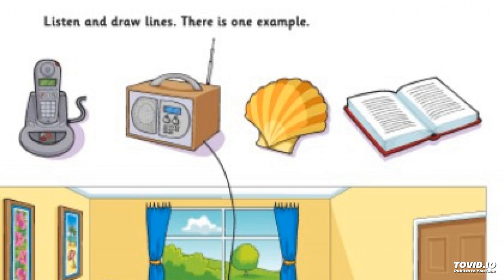Two. Now put the book under the table. Sorry, put the book where? Put it under the small table. Right, I can do that. Three. And now please put the phone on the mat. The phone? Yes, put it on the mat. All right. I'm drawing that line now.